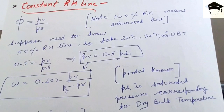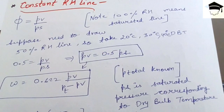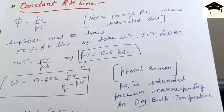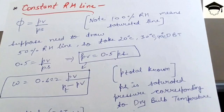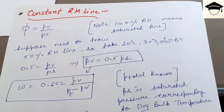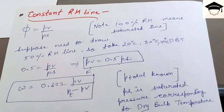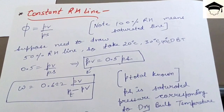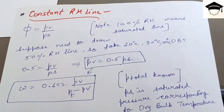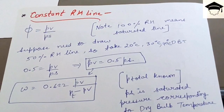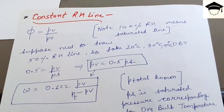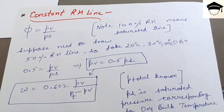First, solve for 20°C. At 20°C, find the saturated pressure PS from the steam table. Using PV = 0.5 × PS, find PV — the partial pressure of vapor. Then use ω = 0.622 × PV / (P_total − PV), where P_total is the pressure at which you want to draw the psychrometric chart. Substitute the values to find omega.